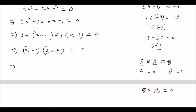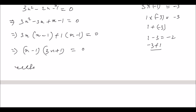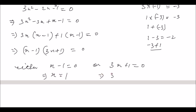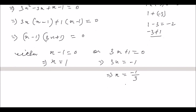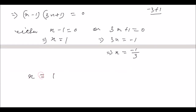So either x minus 1 equals 0 or 3x plus 1 equals 0. From x minus 1 equals 0, x equals 1. From 3x plus 1 equals 0, 3x equals minus 1, so x equals minus 1 divided by 3. The x values are x equals 1 and x equals minus 1 by 3.